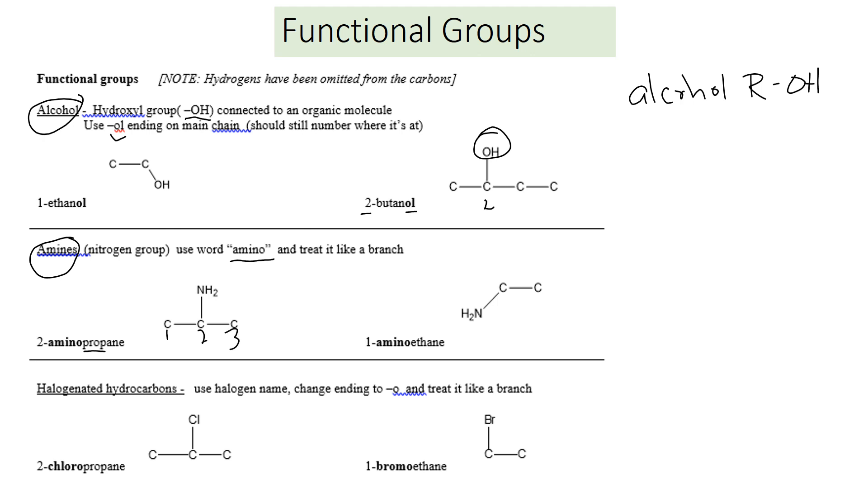Notice the hydrogens have been omitted. They're there, but they aren't drawn just to keep it from being messy. The amino group is on carbon number 2. This is like if you take NH3, ammonia, and then you remove one of the hydrogens and replace it with a carbon group.